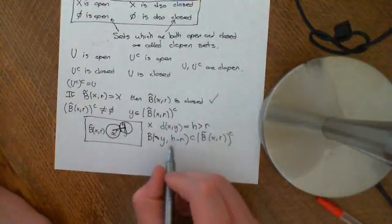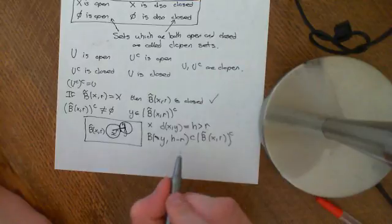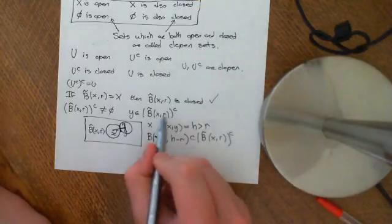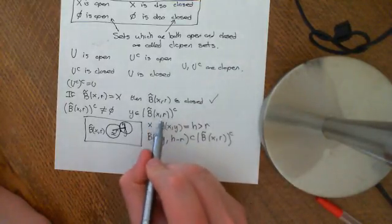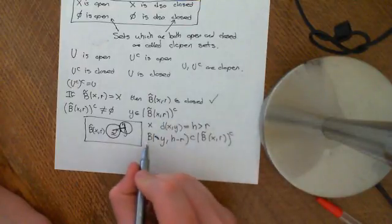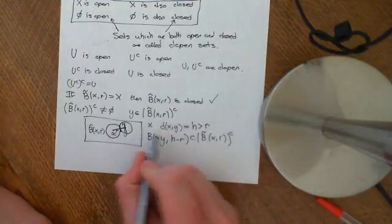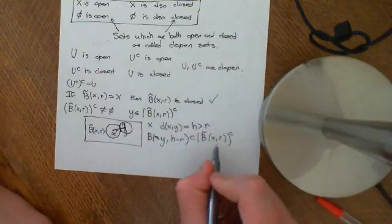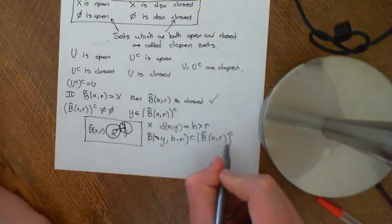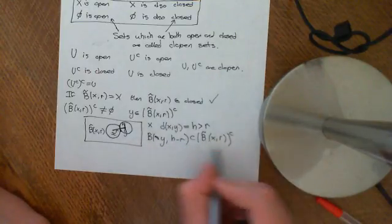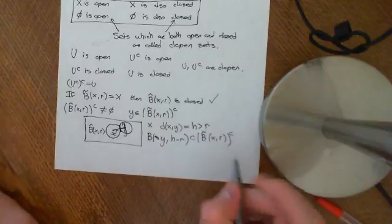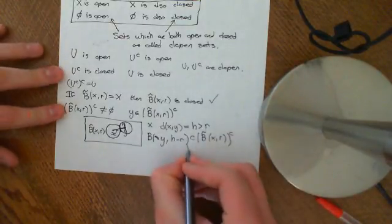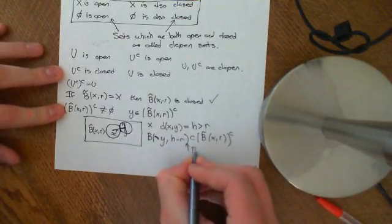What we need to show is that this point Y is an interior point of the complement of the closed ball. The way that we do that is we find some open ball around the point Y which is completely contained within the complement. That's what I want to show you — this is what I'm required to prove, RTP.